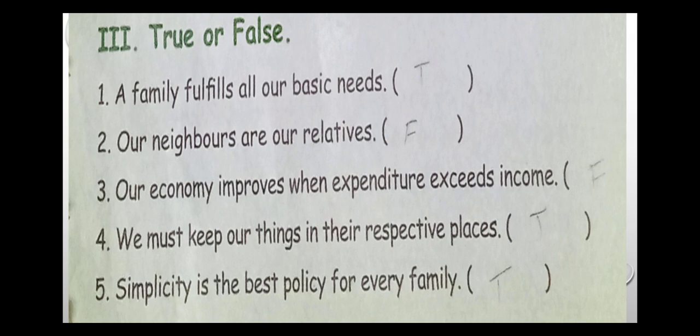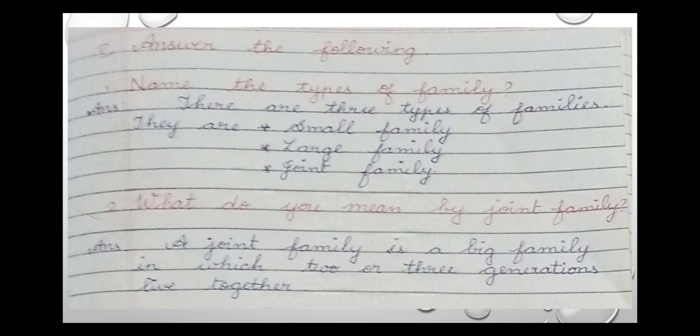Fourth: we must keep our things in their respective places — the answer is true. Fifth: simplicity is the best policy for every family — the answer is true.